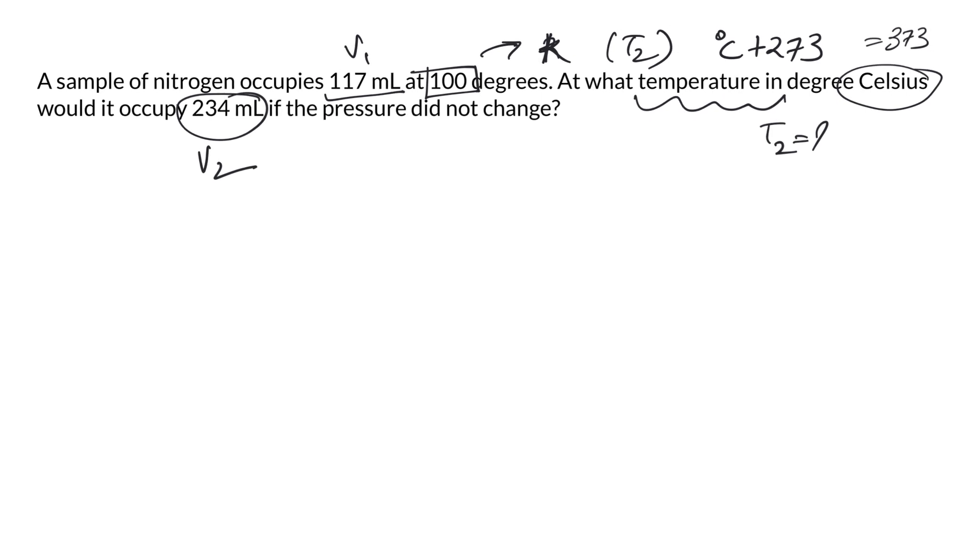So V1 upon T1 is equal to V2 upon T2. That means 117 upon 373 is equal to, we have been given V2, that is 234 upon T2 that we didn't know. If you just solve for T2, that comes to be 234 times 373 divided by 117, and that comes to be about 746 Kelvin.